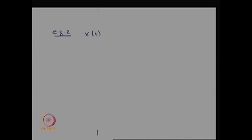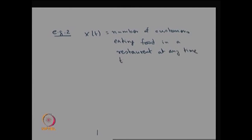In example 2, let me define x(t) as the number of customers eating food in a restaurant at any time t. Therefore, you are observing the system — observing the restaurant and how many customers are having food.